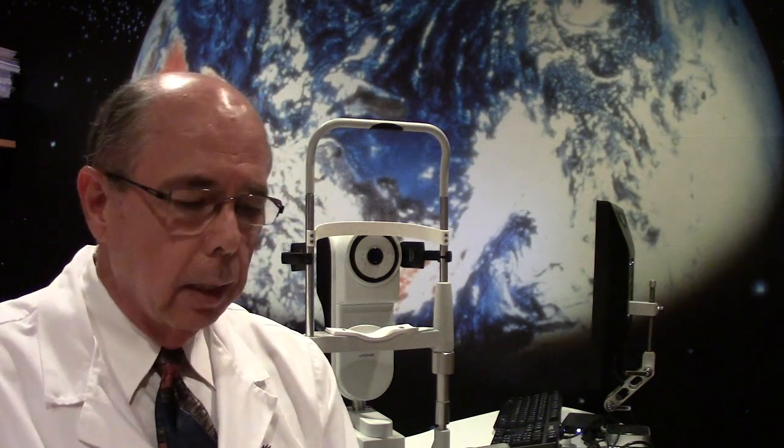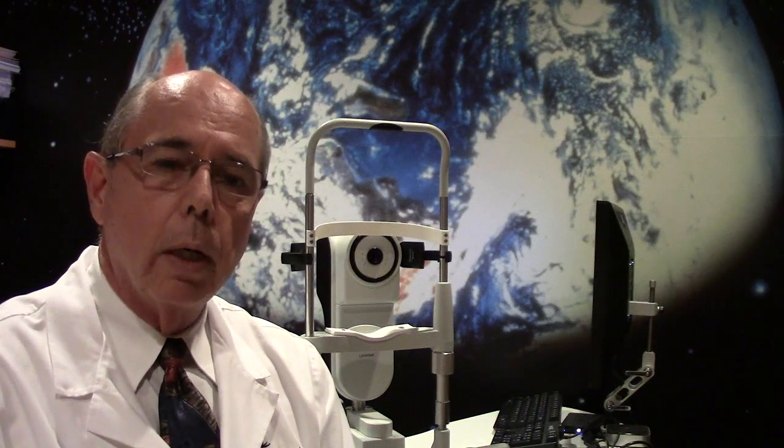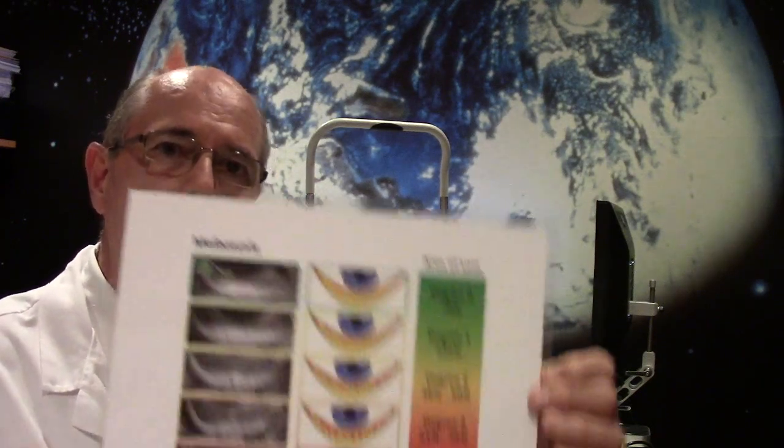The meibomian glands are located in the eyelid and they secrete the oil into the tear film. So we're going to show you a little image here.